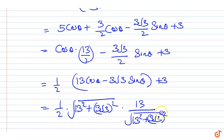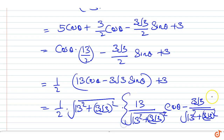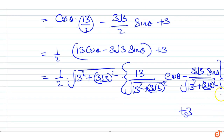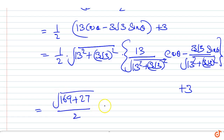This is equal to √(13² + (3√3)²) · cos(θ + φ) + 3, which equals √(169 + 27) · cos(θ + φ) + 3, where tanφ = 3√3/13.